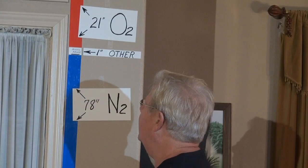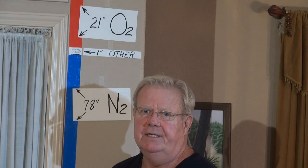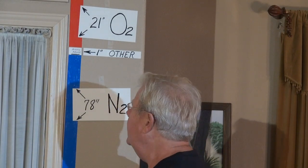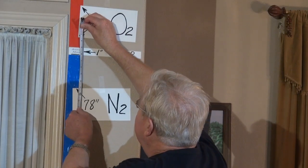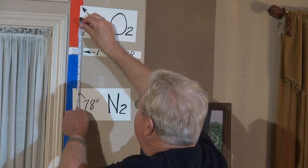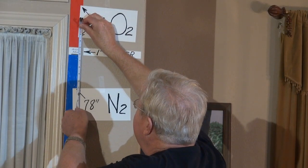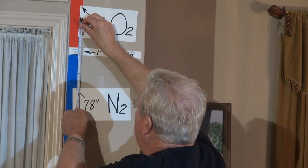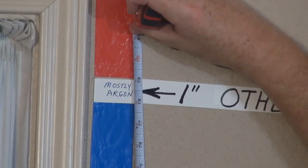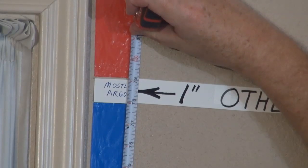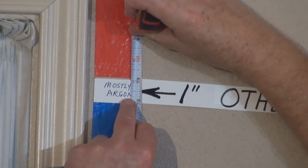So let's measure the carbon dioxide. We'll take one inch on this ruler — one inch. Carbon dioxide accounts for four one-hundredths of an inch. This ruler doesn't even go down to four one-hundredths of an inch. It goes down to a sixteenth.